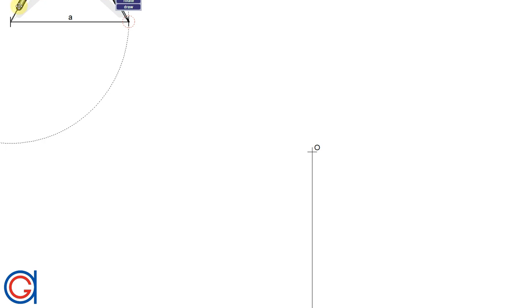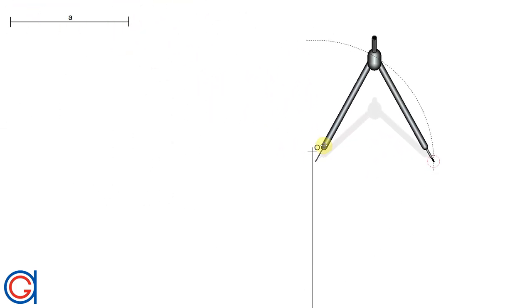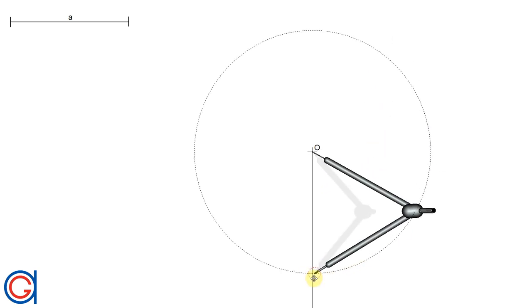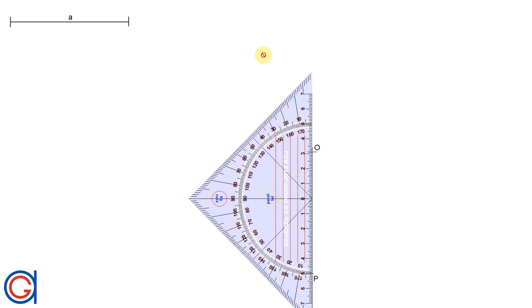Now setting our compass to the length of the apothem A, we are going to transport it onto this vertical line, setting our compass on point O and scribing an arc, obtaining a new point which we will call P.